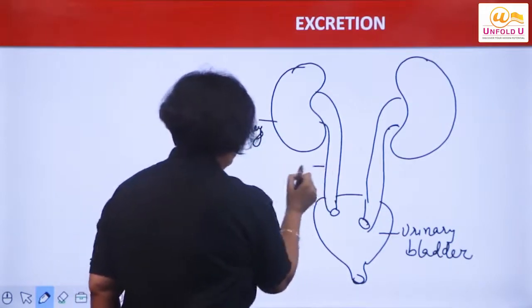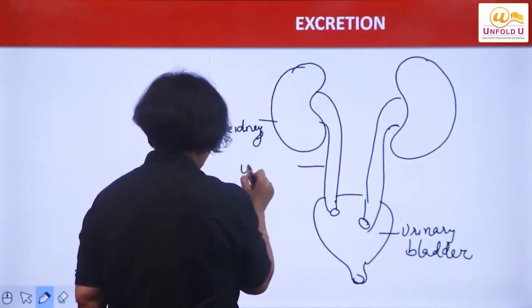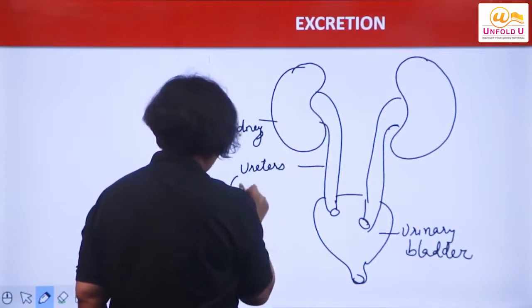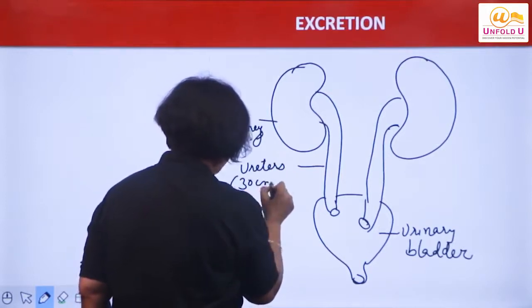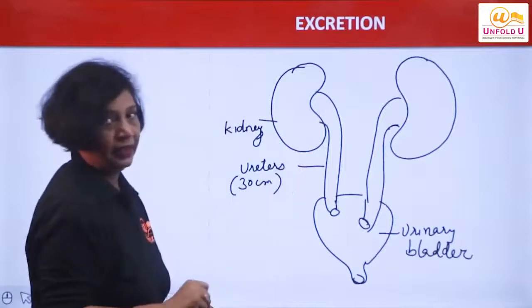From these, tubes arise. These are called ureters. These are tubes which are about 30 centimeters in length.